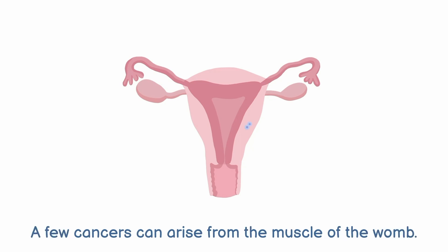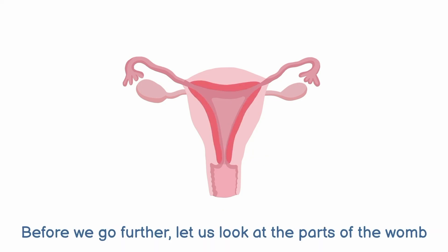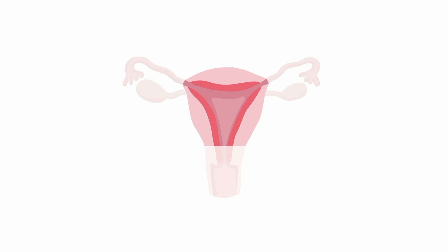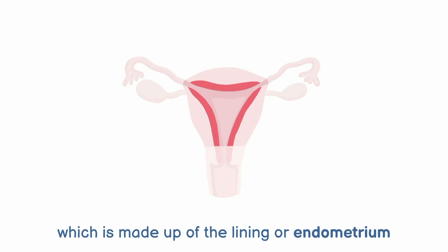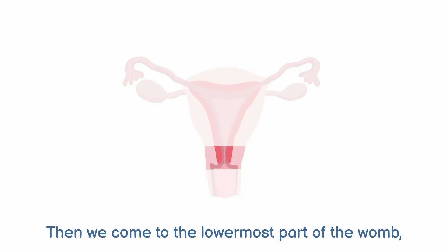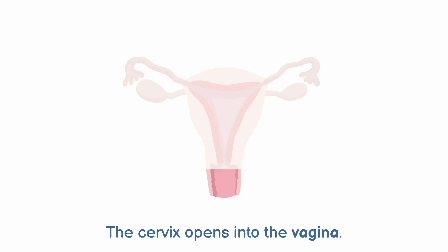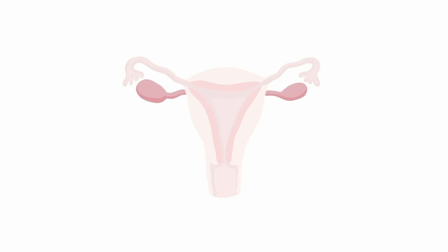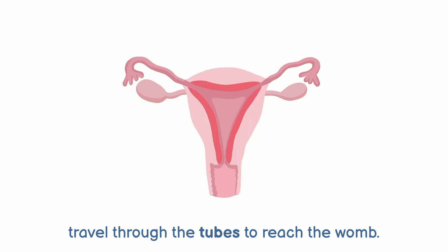A few cancers can arise from the muscle of the womb; these are known as sarcomas. Before we go further, let us look at the parts of the womb and the structures related to it. The main part of the womb is known as the body, which is made up of the lining or endometrium, and the muscle or myometrium. The lowermost part of the womb is known as the cervix or neck of the womb, which opens into the vagina. The ovaries are where eggs are produced, which travel through the tubes to reach the womb.